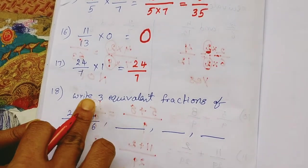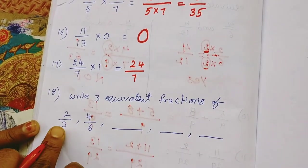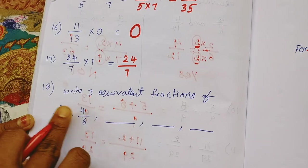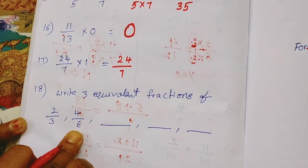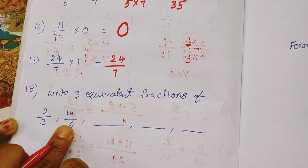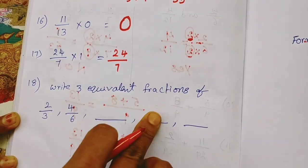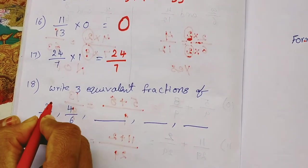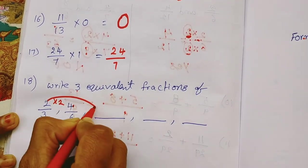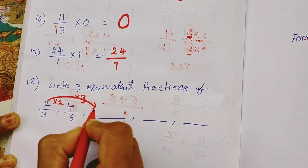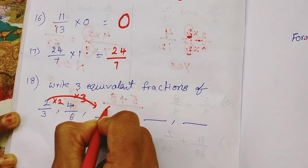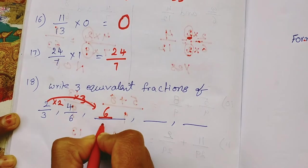In last bit I show, write 3 equivalent fractions of the 2 by 3. So first equivalent fraction already they wrote, what is that? 4 by 6. So what other fractions? 2 by 3 into 2 already completed. So 2 by 3 into 3, 2 times 3 are 6 by 3 times 3 are 9.